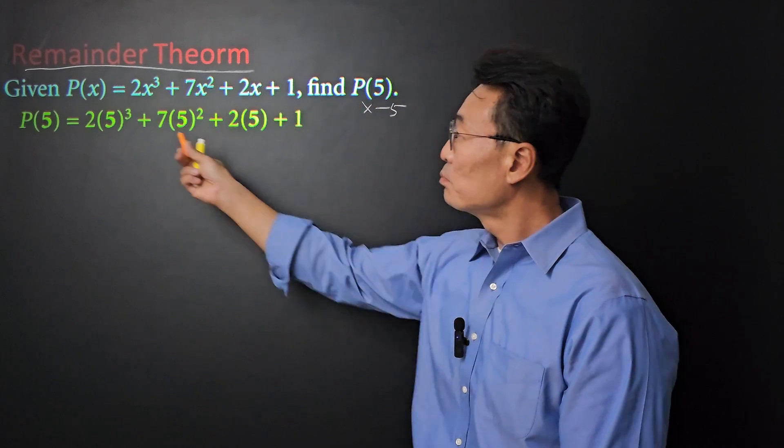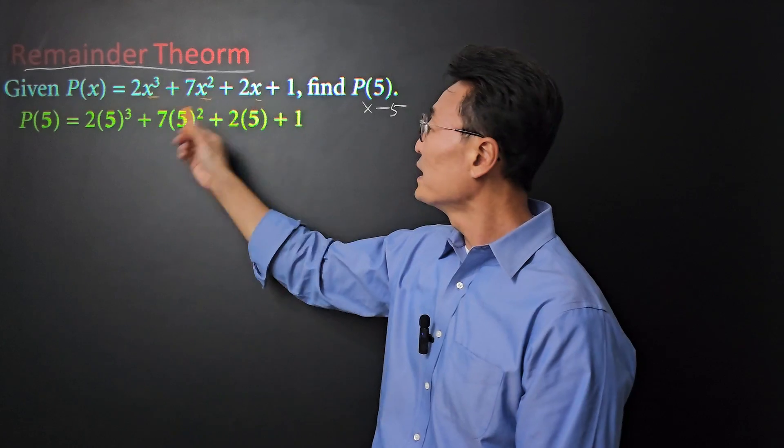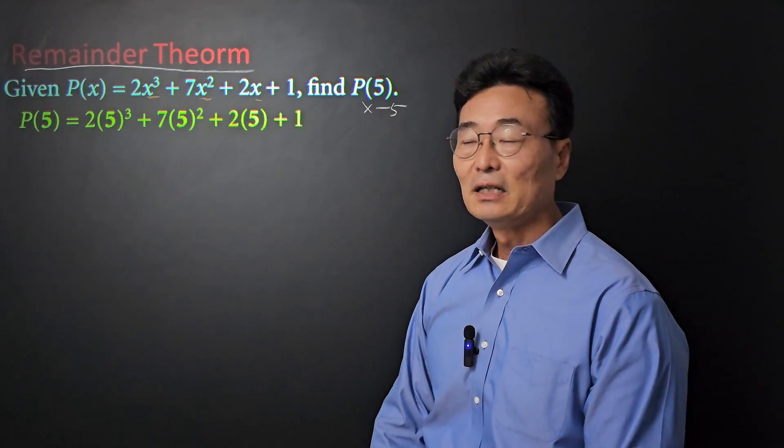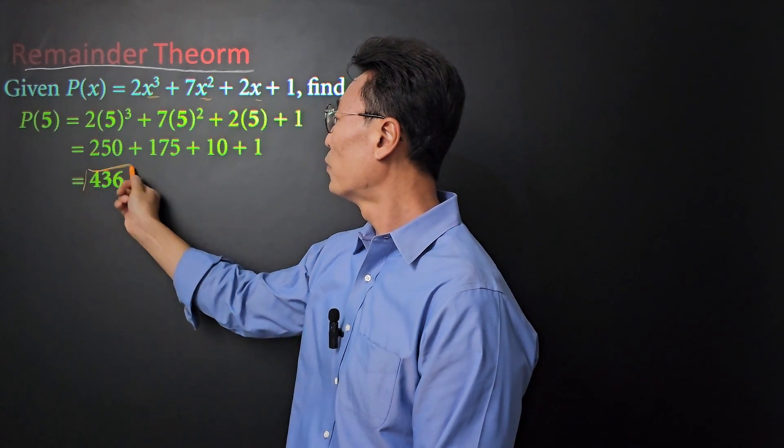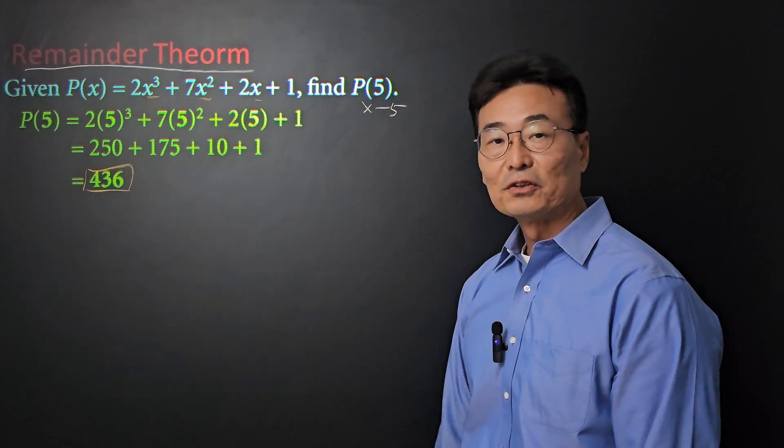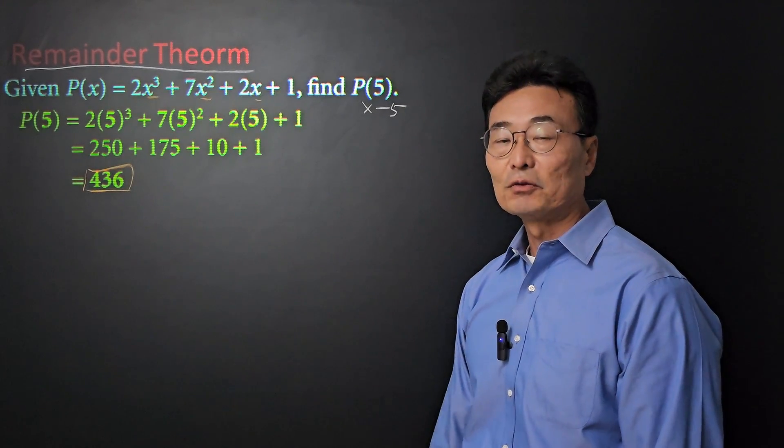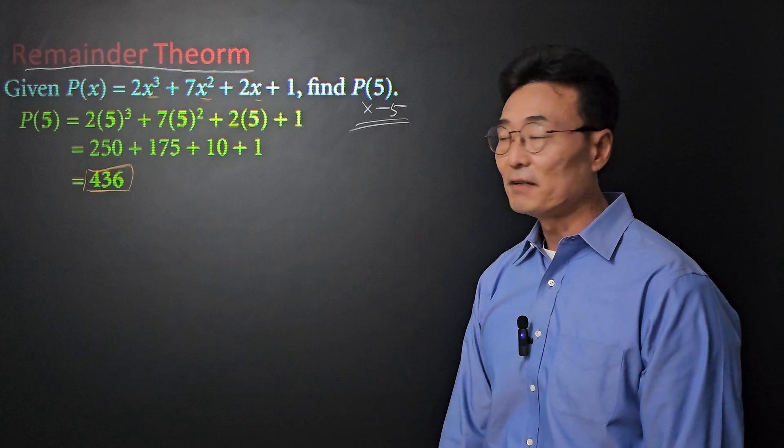So, we take the 5, plug it into the x cubed, x squared, and x, and this is what we get. And if we simplify this, we get a final value of 436.